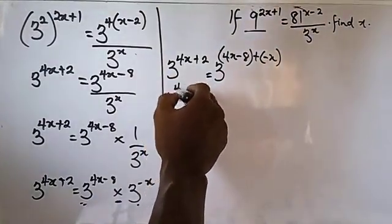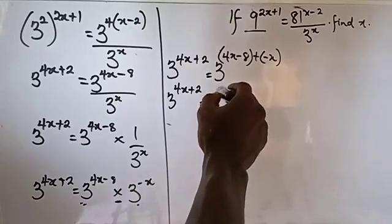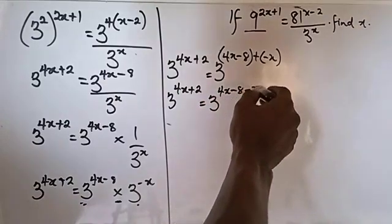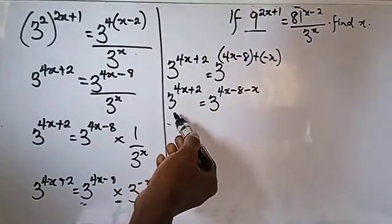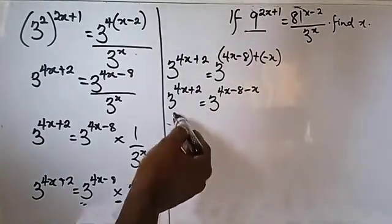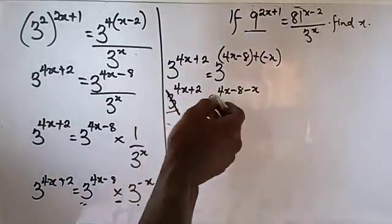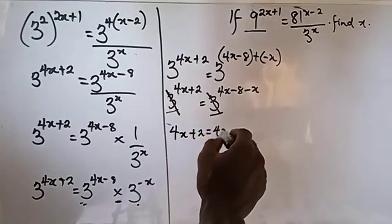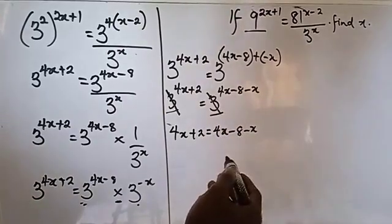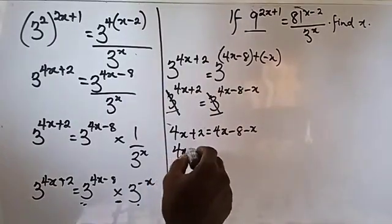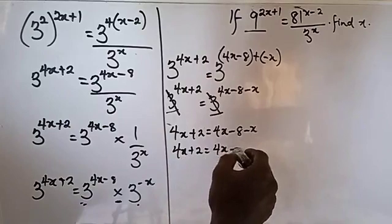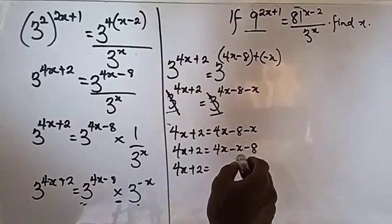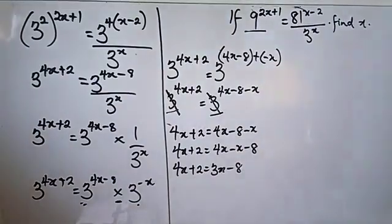So we have 3 raised to power (4x plus 2) equals 3 raised to power (4x minus 8 minus x). Since both sides have a common base of 3, we can cancel it out and bring down the powers: 4x plus 2 equals 4x minus x minus 8. Collecting like terms: 4x minus x gives 3x, so we have 4x plus 2 equals 3x minus 8.